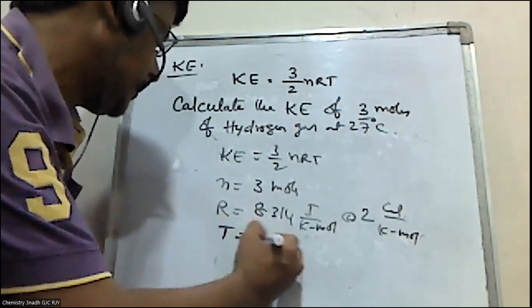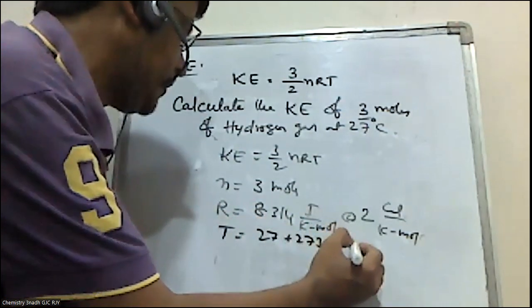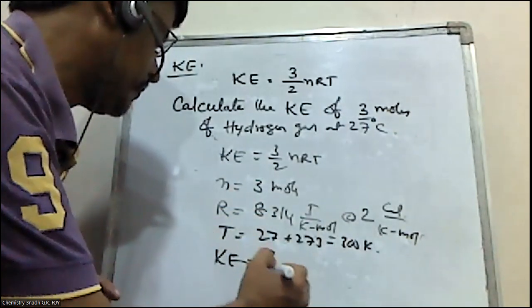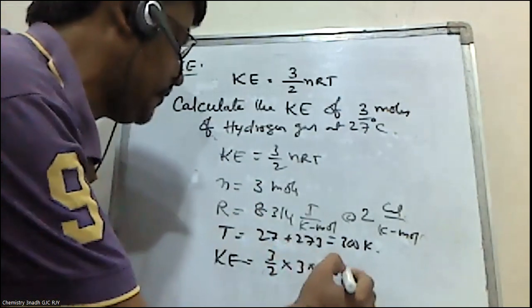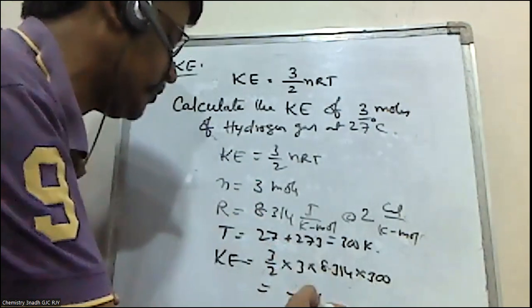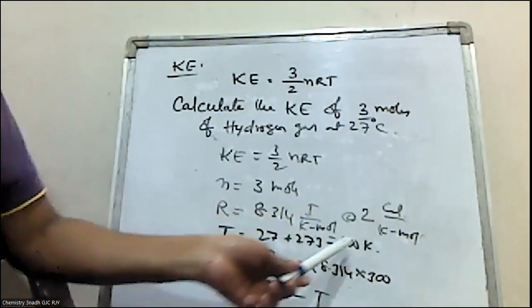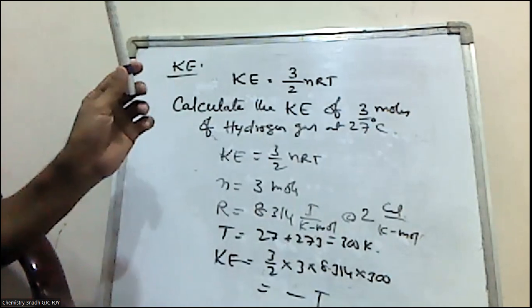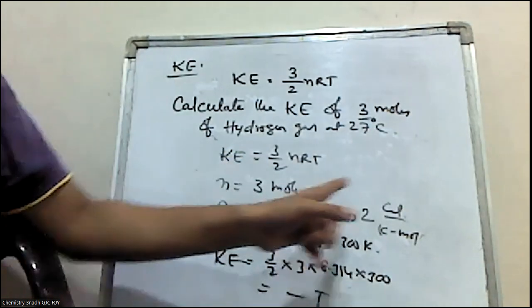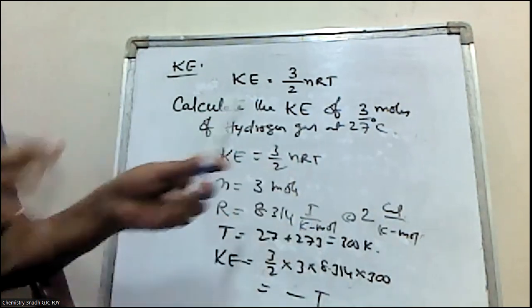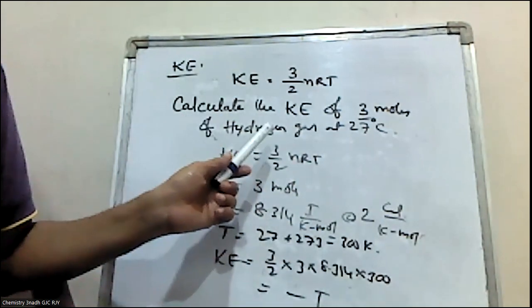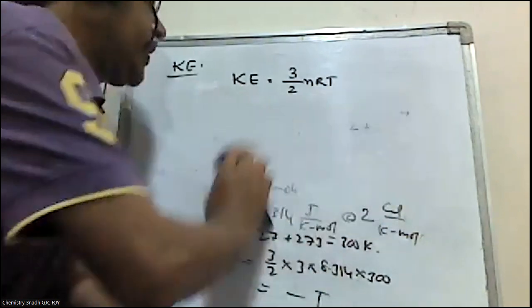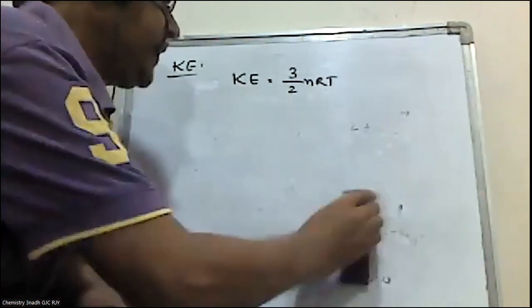Calculate the kinetic energy of three moles of hydrogen gas at 27 degrees centigrade. The formula is KE equals 3/2 nRT. n is 3 moles, R is 8.314 joules, T is 27 plus 273 equals 300 Kelvin. Substitute: 3/2 times 3 times 8.314 times 300 to get the answer in joules or convert to calories.